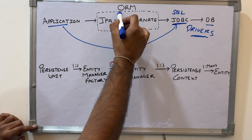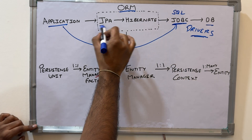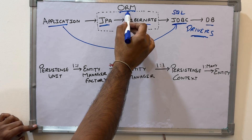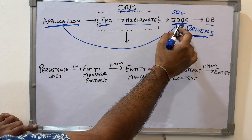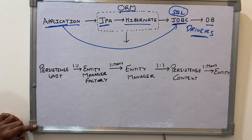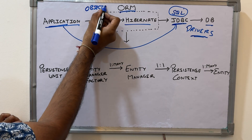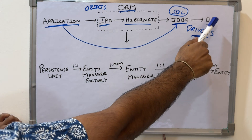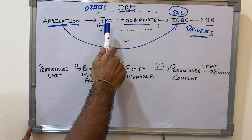Then there is ORM — Object Relational Mapping — which comes into the picture. Inside this ORM framework, the terms you will mostly hear are JPA and Hibernate. With JDBC you deal with SQL queries, but with ORM what generally happens is you deal with objects. You don't have to deal with SQL; you manage your databases through objects only.